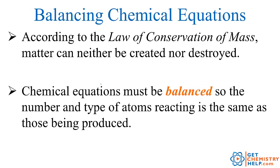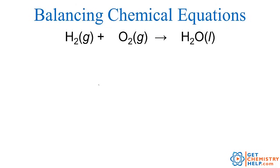So when you're balancing, what that means is that you're trying to show that the same number and type of atoms that react are the same number and type of atoms that are being produced. So if four iron atoms go in, four iron atoms have to come out. If five sulfur atoms go in, five sulfur atoms have to come out. So let's look here at an example and just try it. So here we have two hydrogen atoms go in, two hydrogen atoms come out. So far so good.